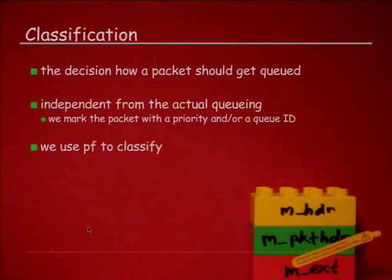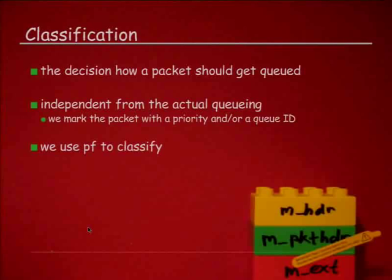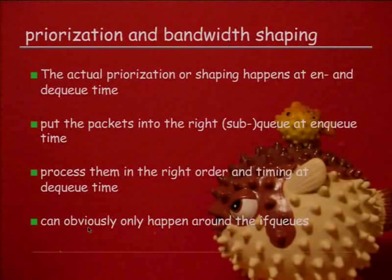The classification I keep talking about is basically the decision of how the packet should get queued and how it should be handled. That is completely independent from the actual queuing — this is a very common misunderstanding. Classifying just marks the packets, so you can classify in a completely different spot than where the actual queuing happens. In OpenBSD, all we do for classification is mark the packets with a QID in the packet header in the mbuf. We use PF to classify, which is really powerful. The actual prioritization or bandwidth shaping happens when we enqueue or dequeue.